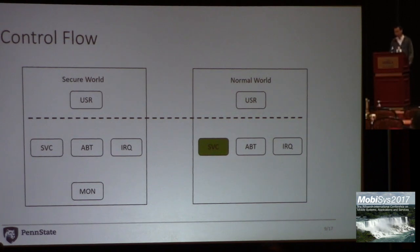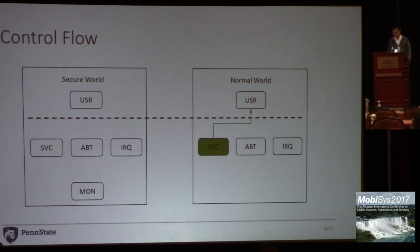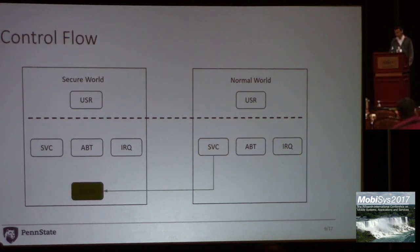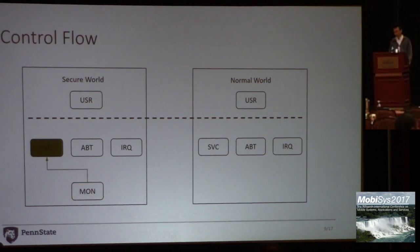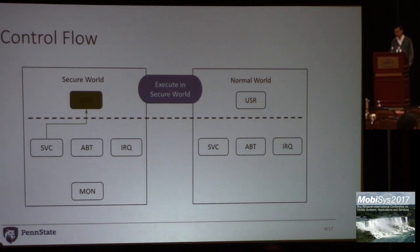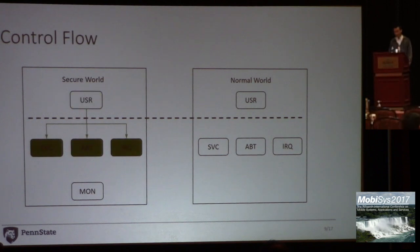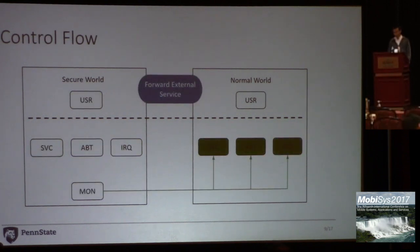Let's look at the workflow of a trusted application. A trusted application is still created by the Linux kernel in the normal world in supervisor mode. But the application never runs in the user space of the normal world. Instead, we import a mode switch to the secure world, and the control flow is transferred from the normal world to SVC mode and finally to the secure world user space. When an exception occurs, the process will be trapped in the corresponding mode. For security-critical services such as a random number request, we directly serve them inside the secure world. For others, we forward them to the normal world — we call them external services.